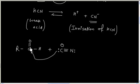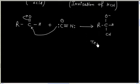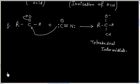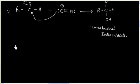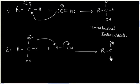The nucleophile CN⁻ attacks the carbonyl carbon. The pi bond opens up and we have a tetrahedral intermediate. In the next step, the tetrahedral intermediate gets protonated to give cyanohydrin. So finally we have cyanohydrin.